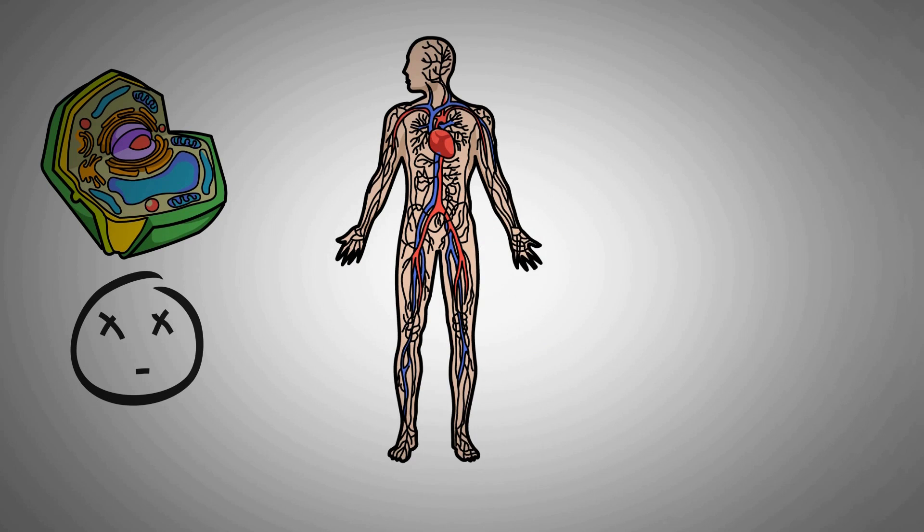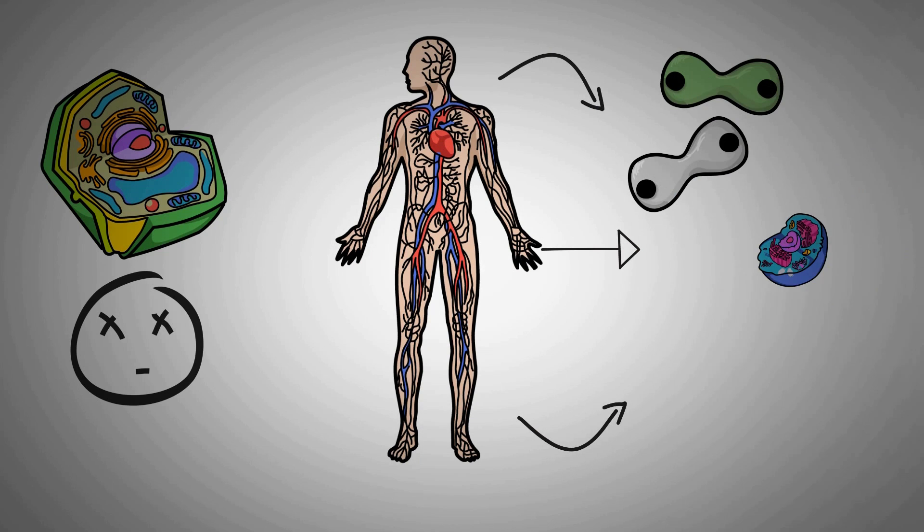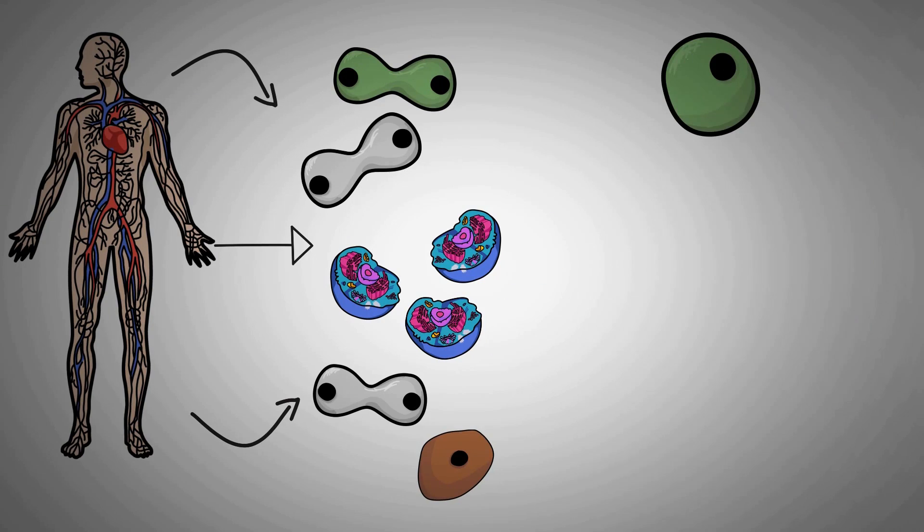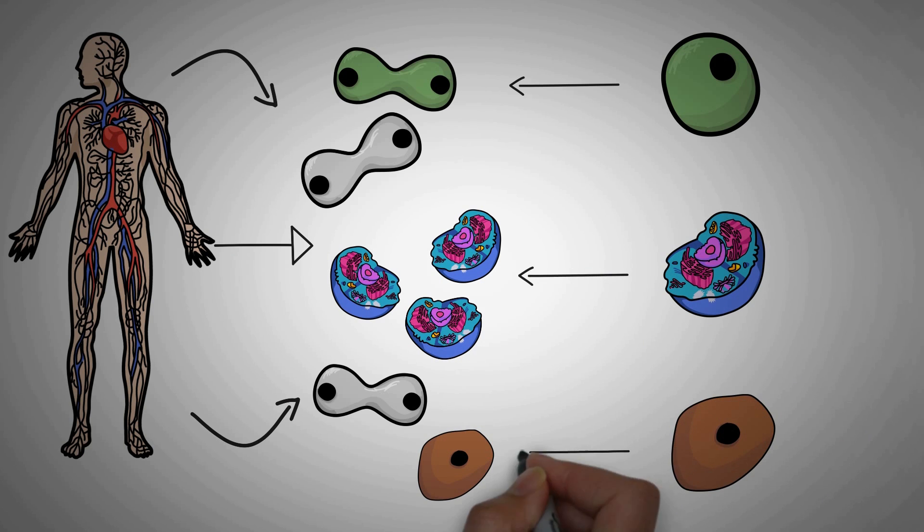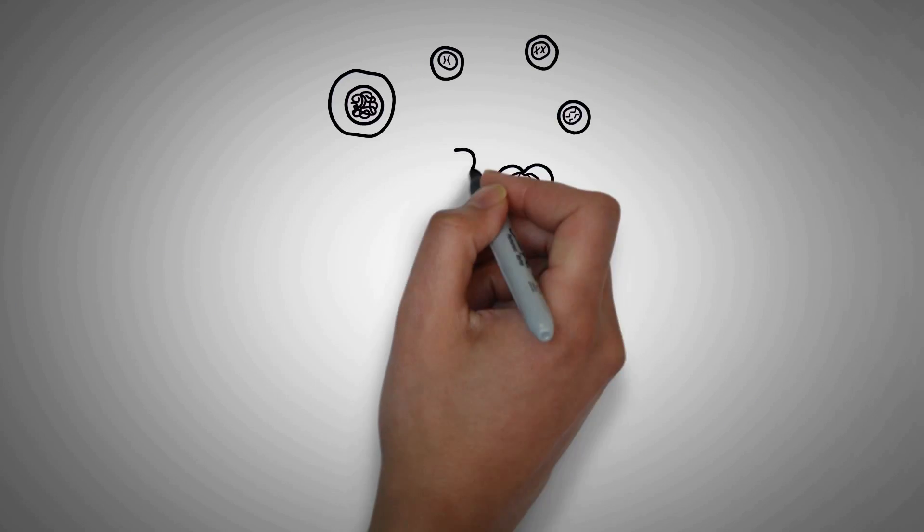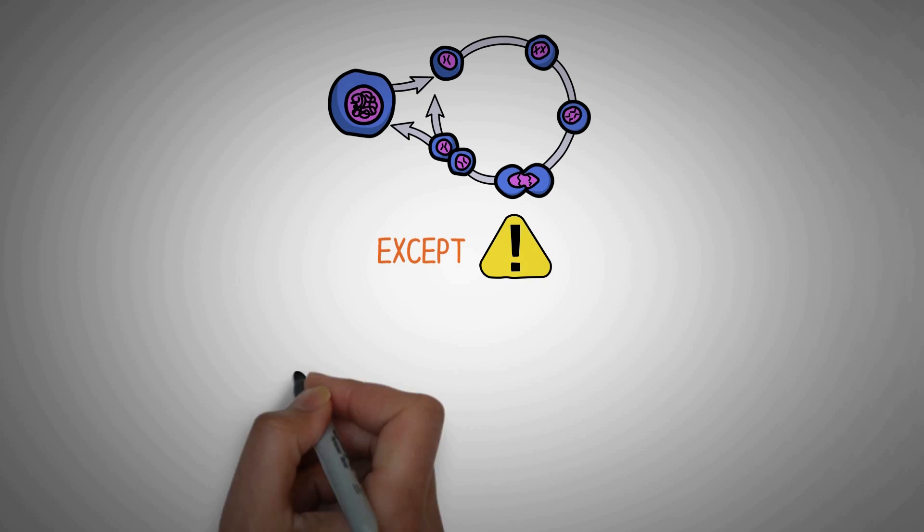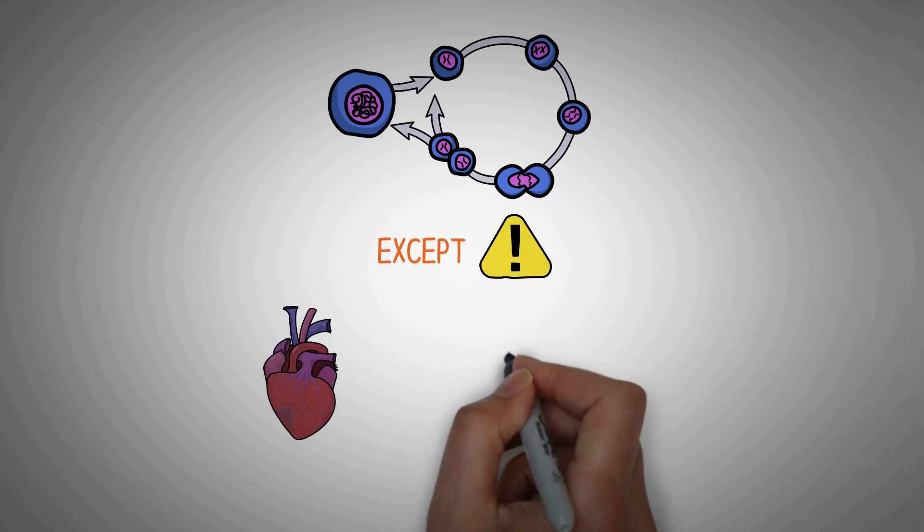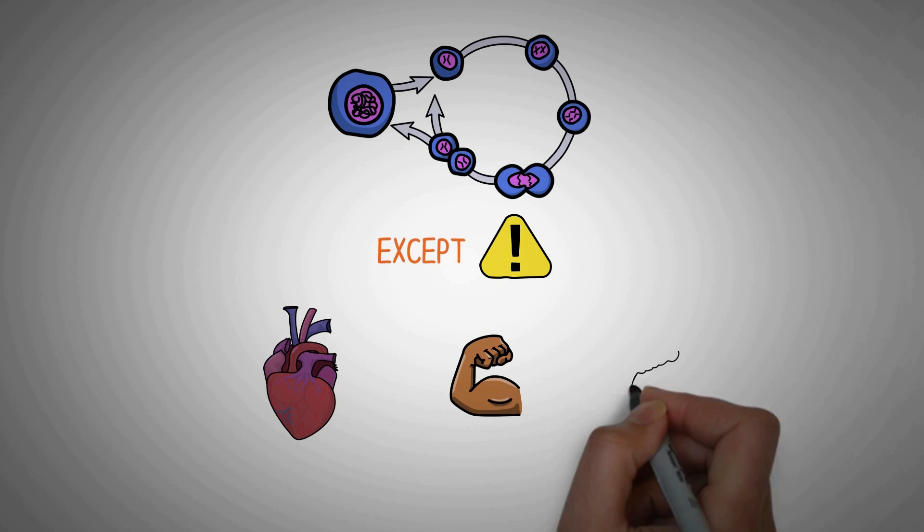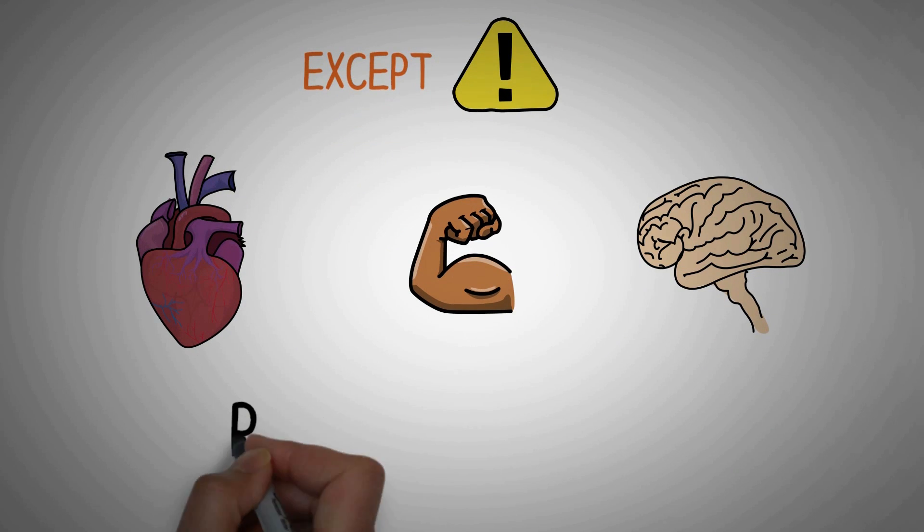Billions of cells die in the human body every day. To make up for this, our body produces billions of new ones. These cells are made from already existing cells. Most of the cells of our body divide except a few ones like the cells present in your heart, the cells present in your muscles and the cells present in your brain. These are known as permanent cells.